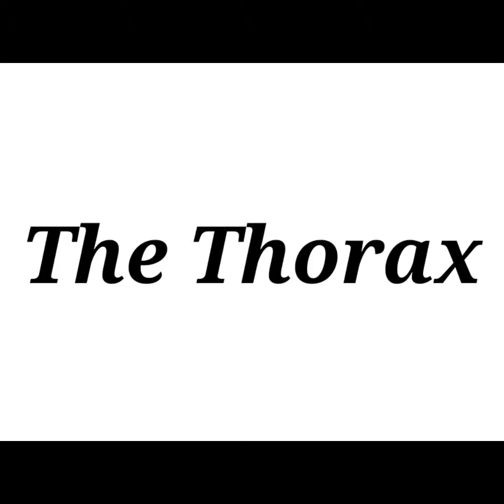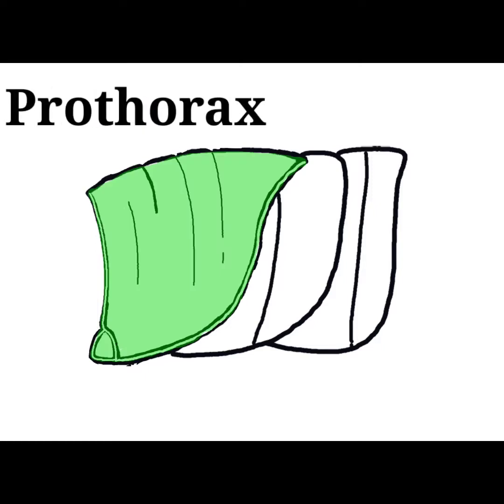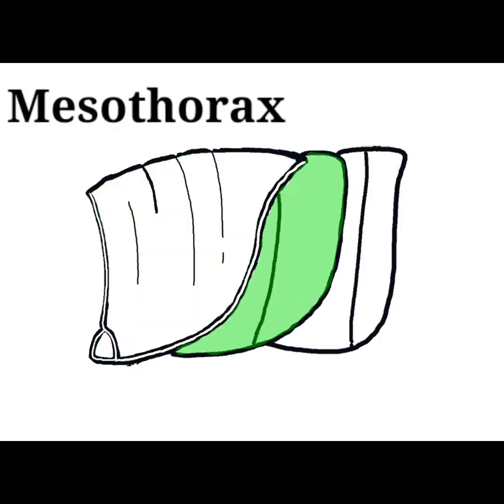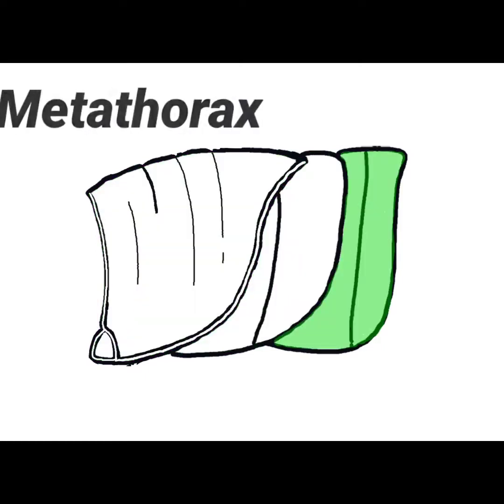The thorax is the second tagma of an insect. It is made up of three segments: the prothorax, mesothorax, and the metathorax.